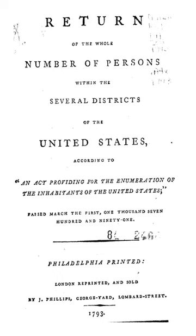Both Secretary of State Thomas Jefferson and President George Washington expressed skepticism over the results, believing that the true population had been undercounted. If there was indeed an undercount, possible explanations for it include dispersed population, poor transportation links, limitations of contemporary technology, and individual refusal to participate.